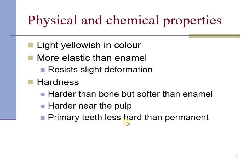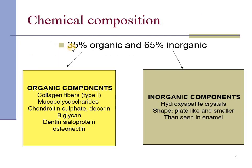The primary dentition is less hard than the permanent dentition. It has 35% organic component and 65% inorganic component. The organic component predominantly consists of type 1 collagen. However, mucopolysaccharides, chondroitin sulfate, decorin, biglycan, dentine xyloprotein, and osteonectin are the other organic components.